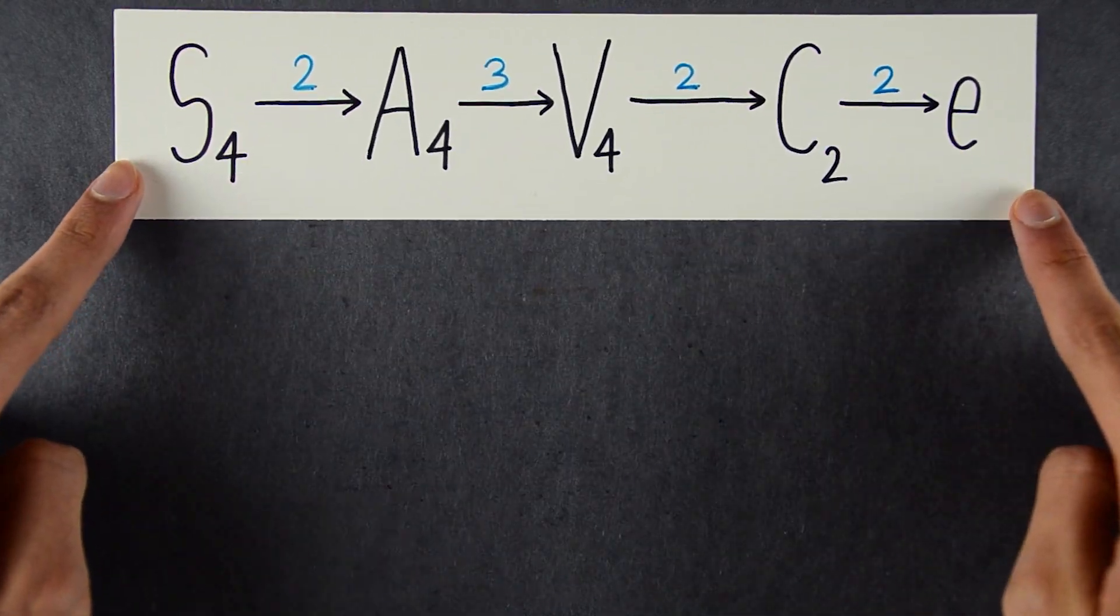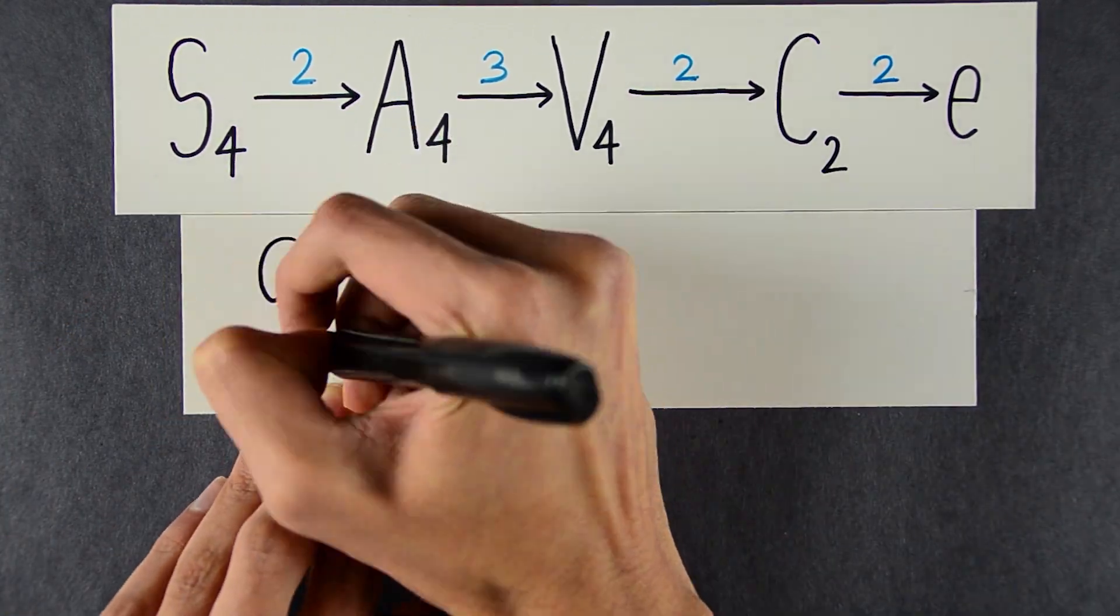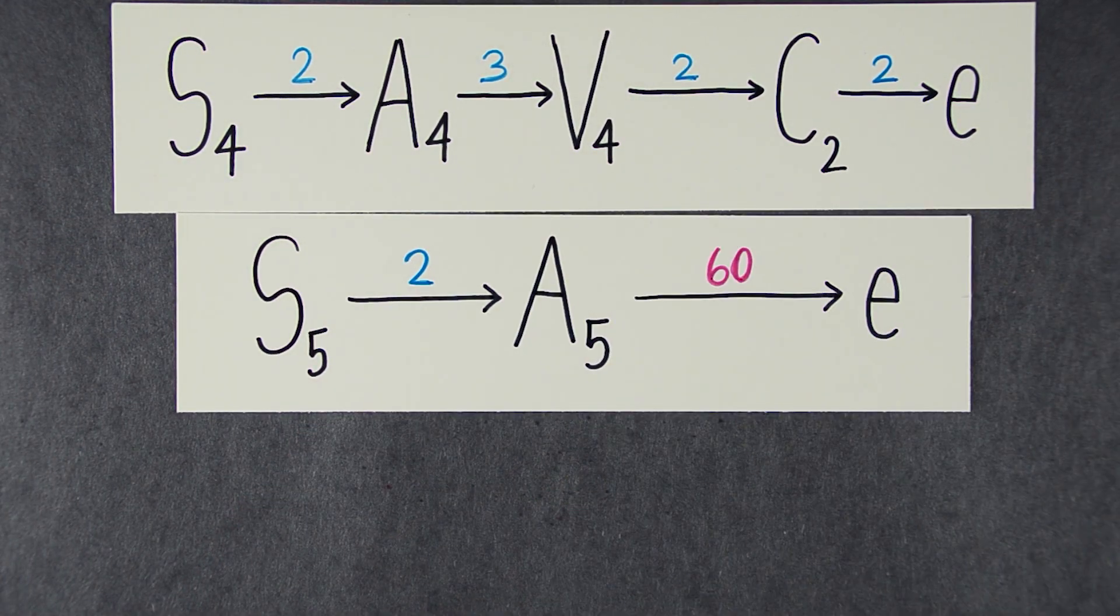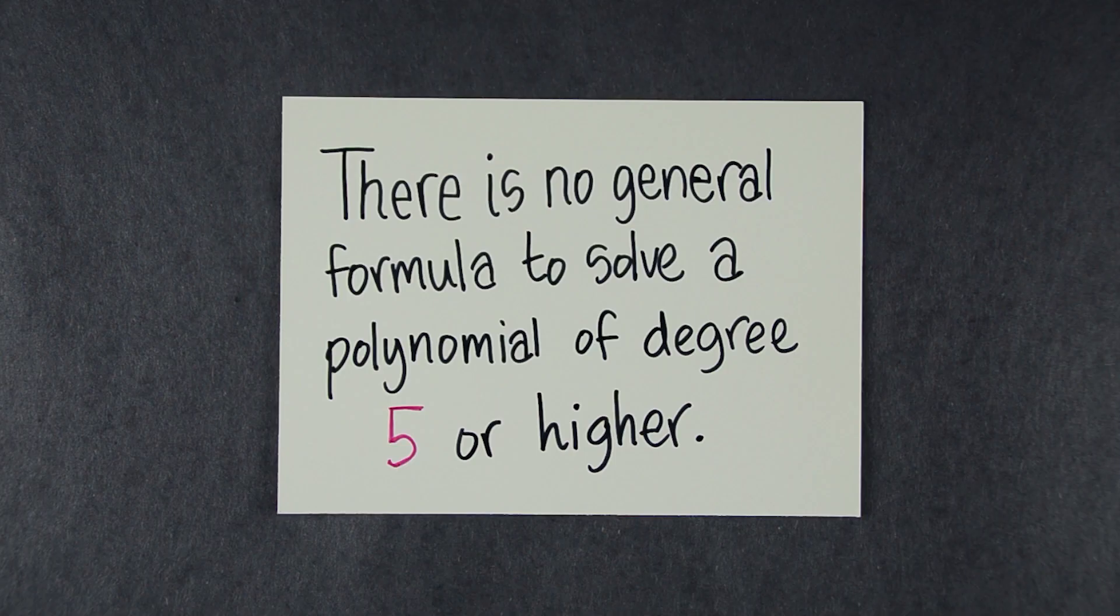But for n equals 5, the situation changes dramatically. You start off fine. 2 is a prime number. But then you have 60 different tiles, so the group isn't a solvable group. That's why there isn't a general quintic formula.